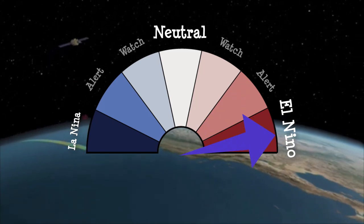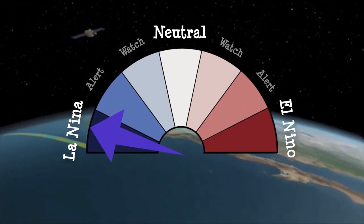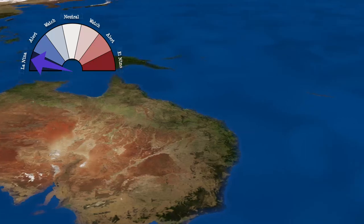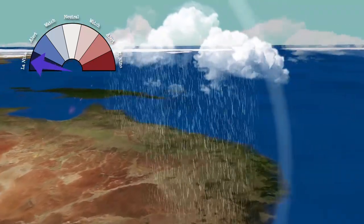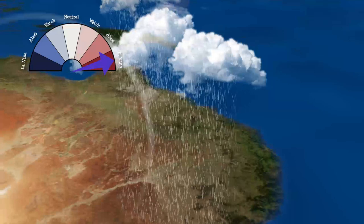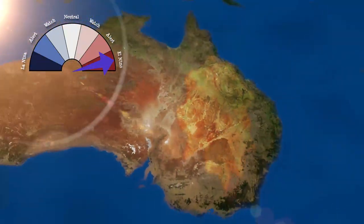Neutral, El Niño, and La Niña. A La Niña event tends to bring above-average rainfall to eastern Australia. During an El Niño event, there is a greater chance of drought and bushfires.